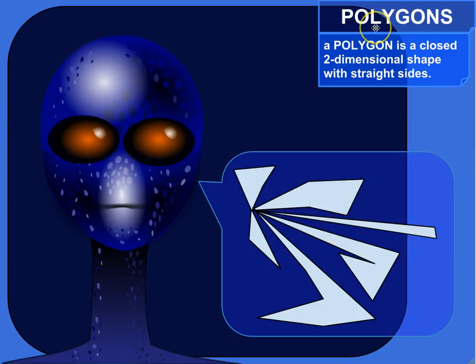A polygon is a closed two-dimensional shape with straight sides. So these are all polygons here.